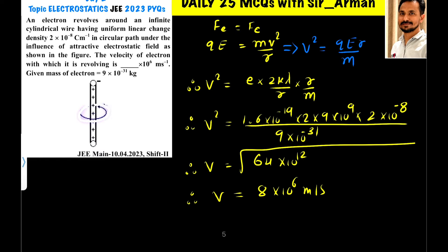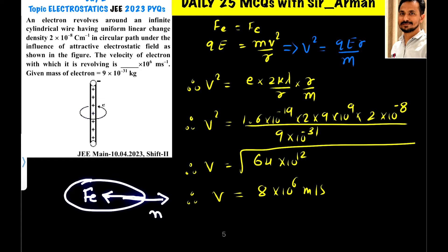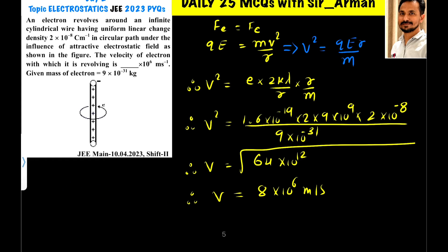If there is a wire and an electron is revolving around it, then for revolution it needs centripetal force. That centripetal force is provided by the electrostatic force. So electrostatic force Fe equals mv²/r — that is the centripetal force. Fe equals centripetal force.